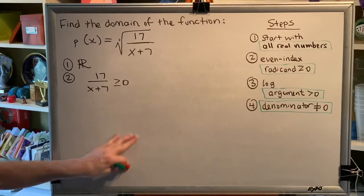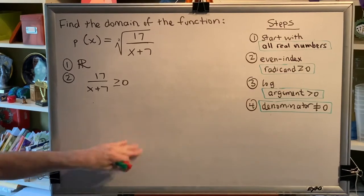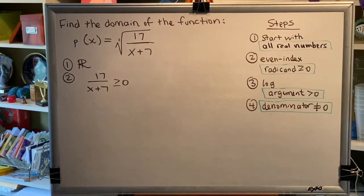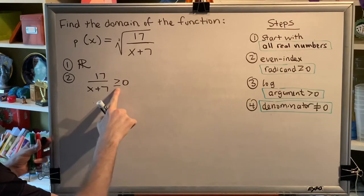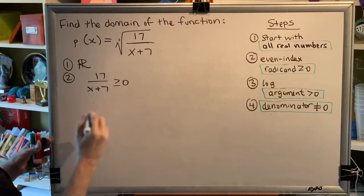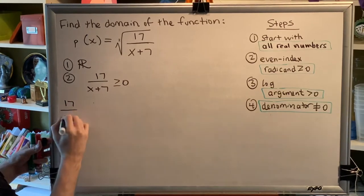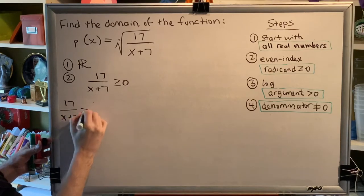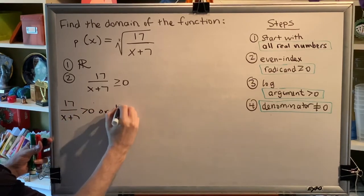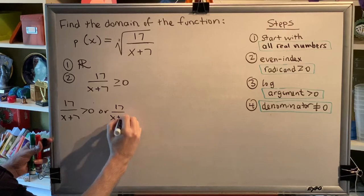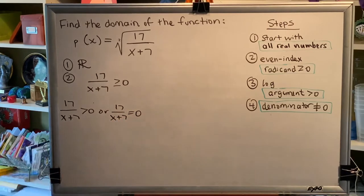Now, the method I'm going to use to solve this inequality is to break this one statement up into two statements. This symbol officially is called greater than or equal to. So what that means is that the 17 over x plus 7 needs to be greater than zero, or the 17 over x plus 7 needs to be equal to zero.